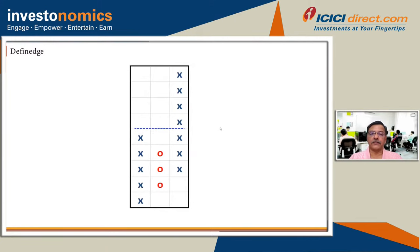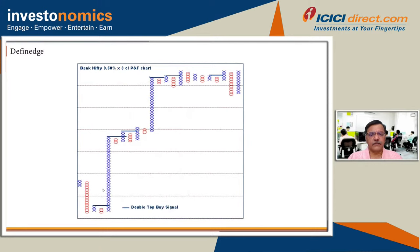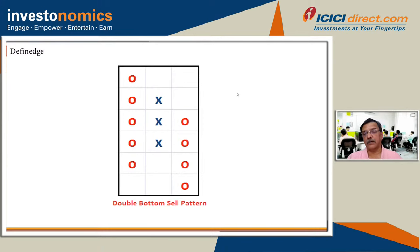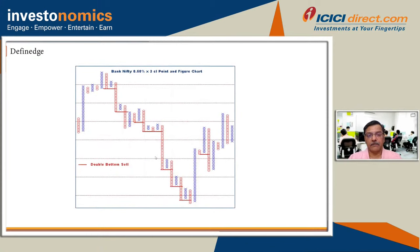The double bottom sell is exactly opposite — a three-column pattern where the first column is O, then a small retracement, then a third column of O that goes below the previous O low. Even when the column of X is being plotted, you know at what level the O column will start as the reversal level. Either you enter there or you know that below this level it is a confirmation — that becomes your stop loss.